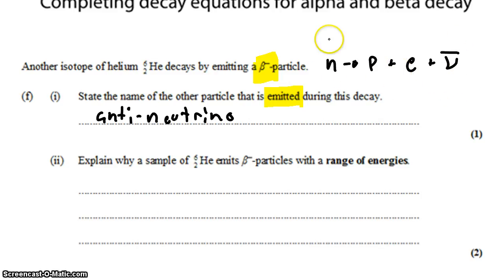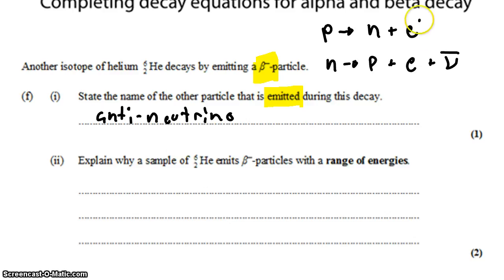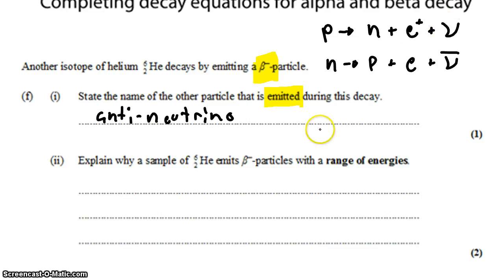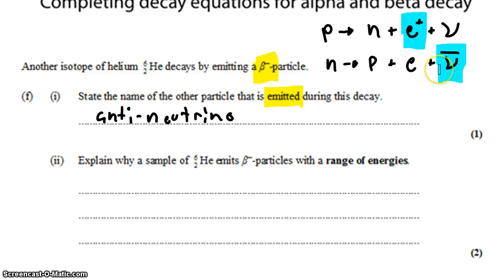In the case of beta plus decay, a proton becomes a neutron and a positron. A positron is an antiparticle. The last particle in this decay is a neutrino. So in both cases, there is only one antiparticle. Therefore, in beta minus decay, it's going to be an anti-neutrino that's the last particle.